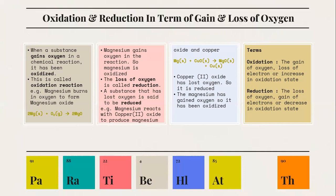In summary, oxidation is the gain of oxygen, loss of electron, or increase in oxidation state. Whereas reduction is the loss of oxygen, gain of electron, or decrease in oxidation state.